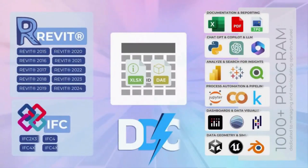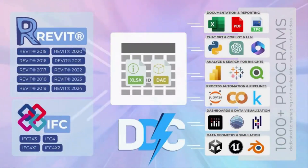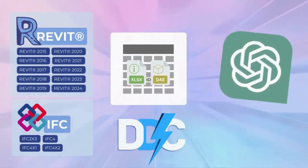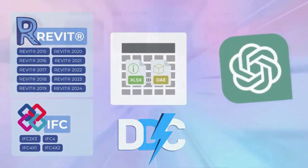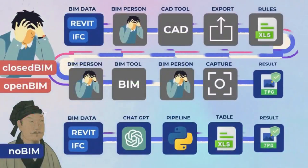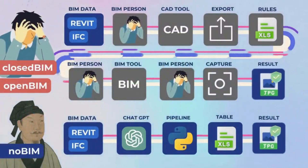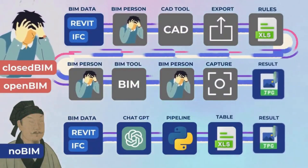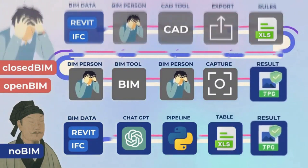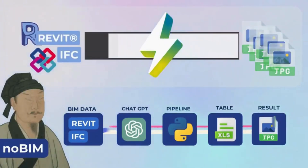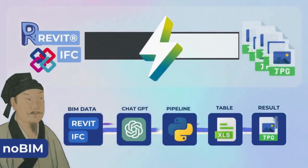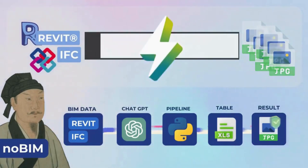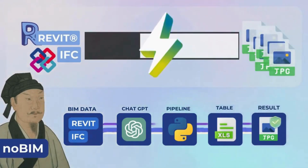We can also use the ChatGPT solution code to create a script that automates the application of the same process logic to any number of future Revit and IFC files. Instead of spending time opening files and manually generating tables and images, we can use the ChatGPT code to fully automate the process and remove the human element from the supply chain in processing hundreds or thousands of future Revit and IFC projects.